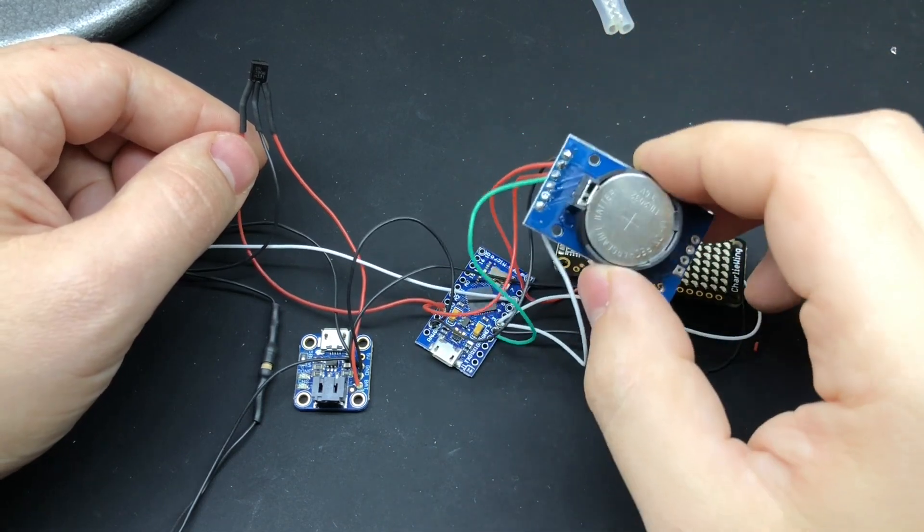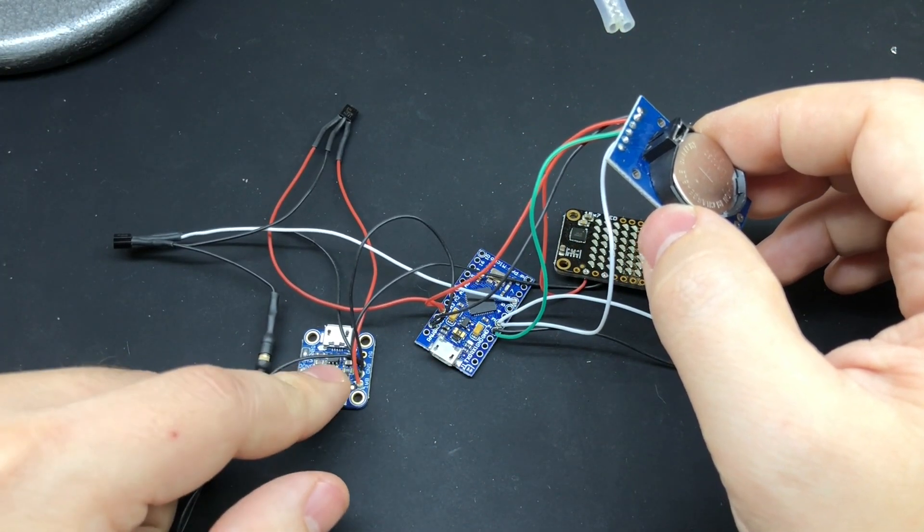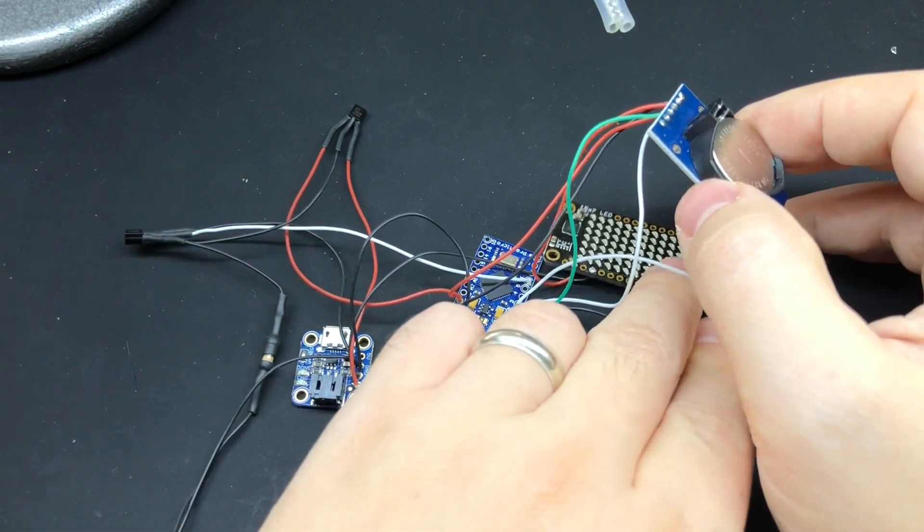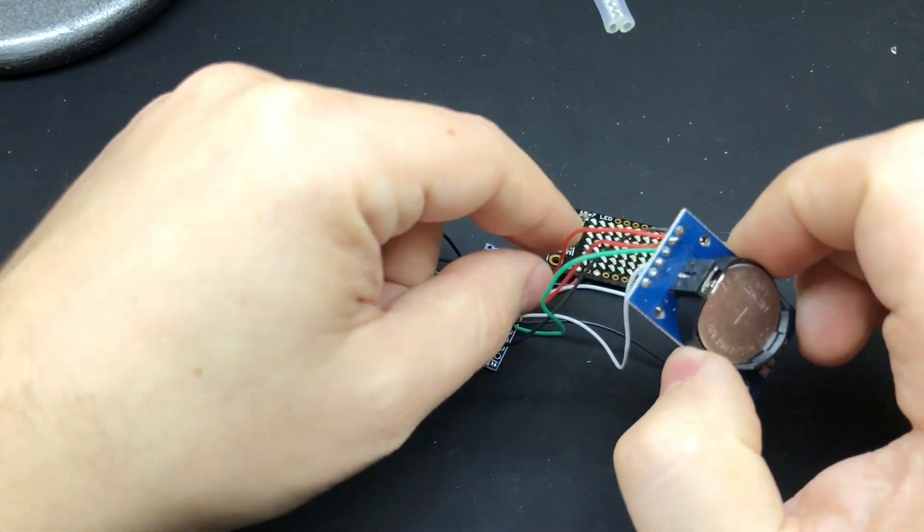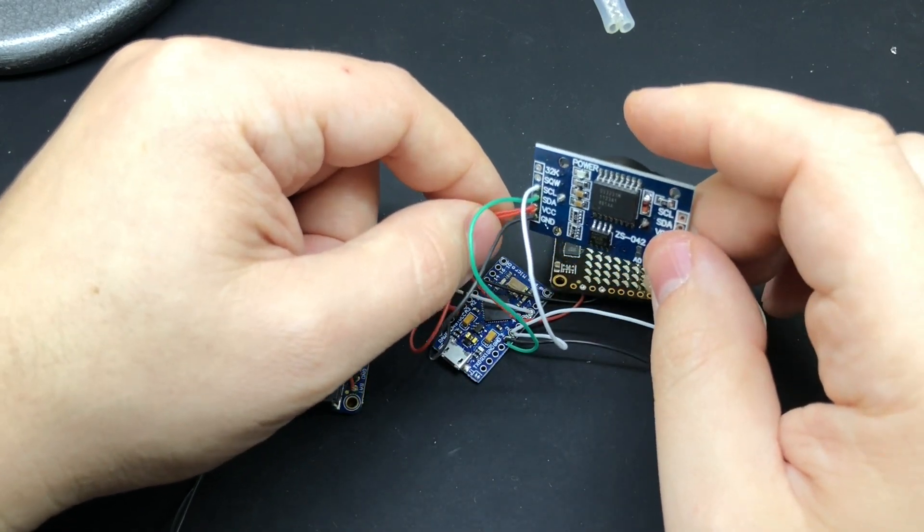I did make one mistake earlier that you may have noticed. I had the screen powered directly off of the battery charging board. If you do that, the screen will always be drawing a little bit of power. So I went ahead and connected it to the same VCC pad on the real-time clock.